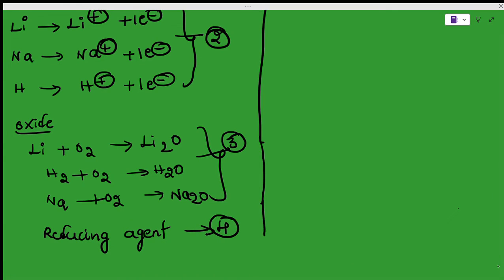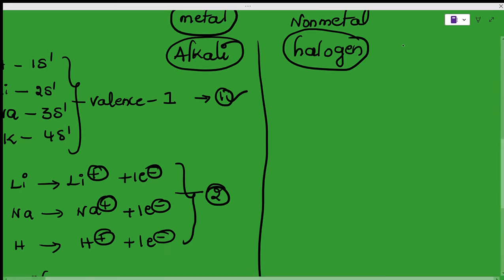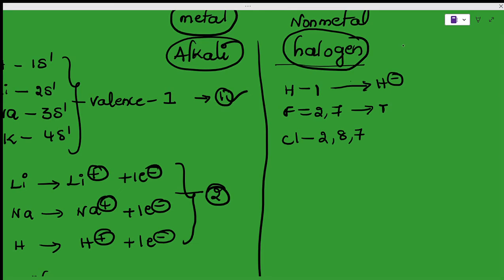Now, why is hydrogen also placed in the non-metals position? Hydrogen's electronic configuration is 1s1. Fluorine's electronic configuration is 2,7 and chlorine's electronic configuration is 2,8,7. If hydrogen gains one electron, it forms the hydride ion. When fluorine gains one electron it forms fluoride, and chlorine gains one electron to form chloride. This means hydrogen behaves as electronegative, just like a halogen — this is one reason.